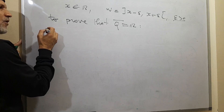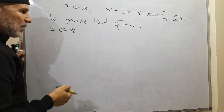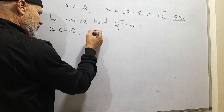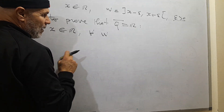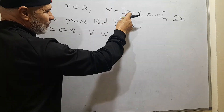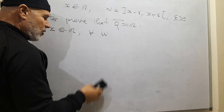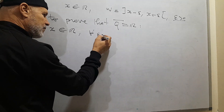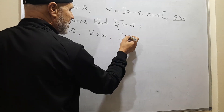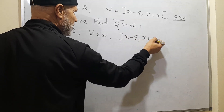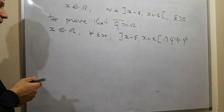To prove this, we have to prove the following: for any given X from R, we have to show that for all neighborhoods of X — that is, for all ε > 0 — we should show that (X − ε, X + ε) ∩ Q is different from the empty set.